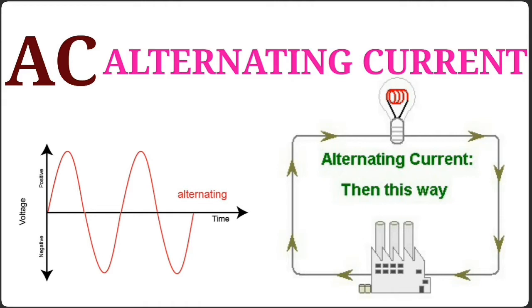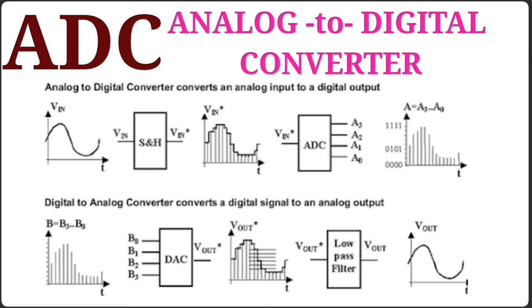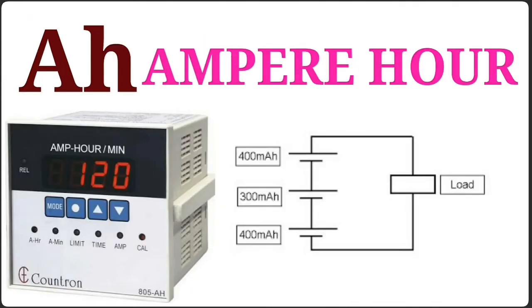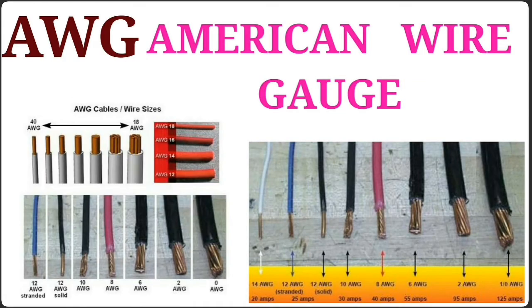AC – Alternating Current. ADC – Analog to Digital Converter. AF – Audio Frequency. AH – Ampere Hour. AWG – American Wire Gauge.